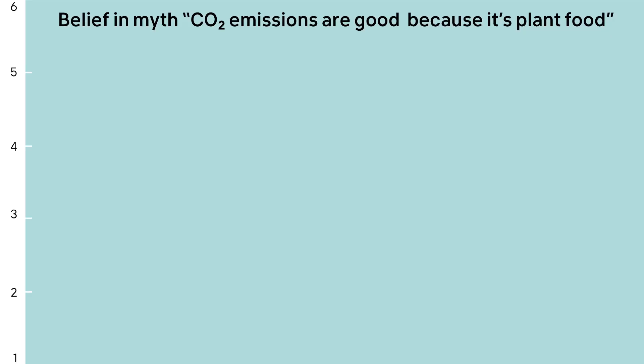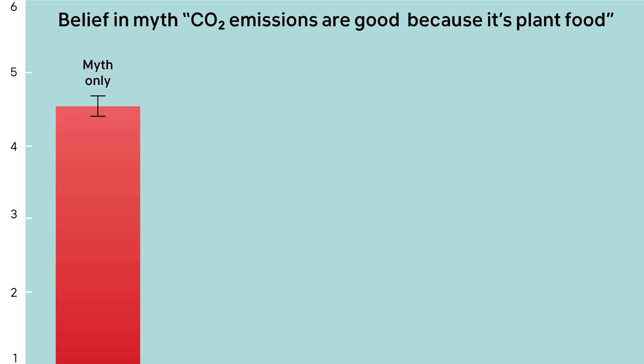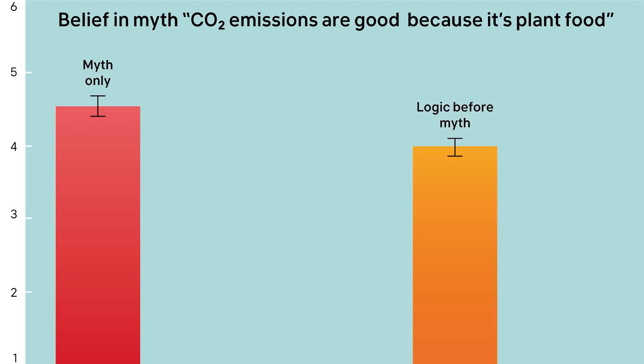We also tested another factor in this experiment: did order matter? If people saw the correction after the misinformation — in other words a debunking — did that have a different effect to if people saw the correction before the misinformation, in other words a pre-bunking? We found that people's misperceptions, or belief in the climate myth, were strongest when they were just shown the misinformation. Misinformation matters. When people were shown the logic-based correction, it reduced belief in the myth regardless of whether it was a pre-bunking or a debunking.